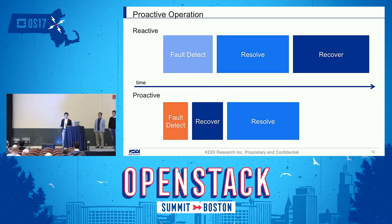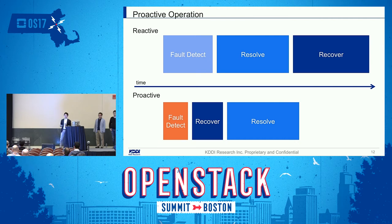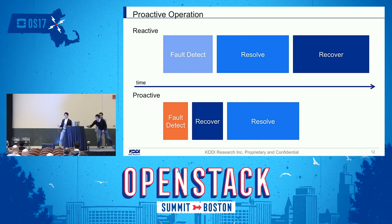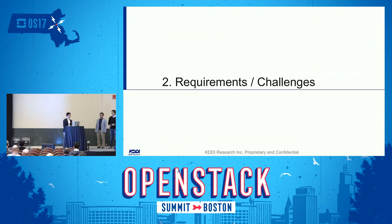In summary for the first part: telecoms want to provide a high quality network, and they should move to proactive operation. In proactive operation, shortening fault detection time is an important factor. But there are some challenges. So, Mibu-san, could you explain the next part?